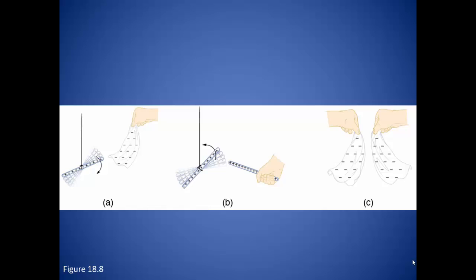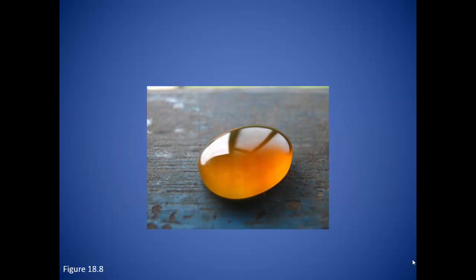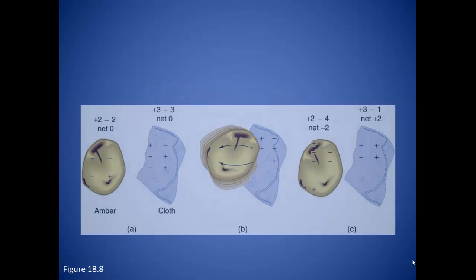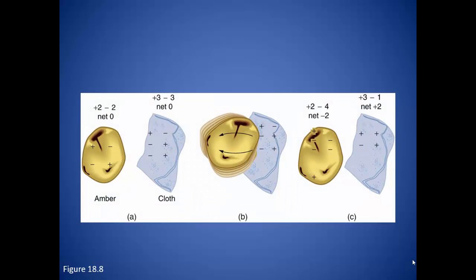The glass rod, having fewer electrons than protons, is now positively charged. Now amber is a type of rock. If we take our silk cloth and rub it against the amber, something different happens than what we saw with the glass. Amber has a higher affinity for electrons than the silk, so the electrons will be stripped away from the cloth and attached to the amber. Now the silk has fewer electrons than protons, and so in this situation becomes positively charged.